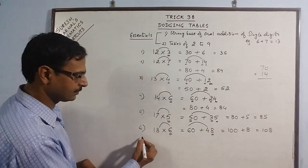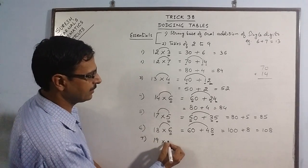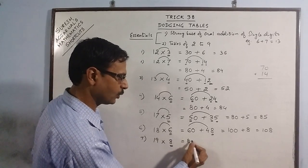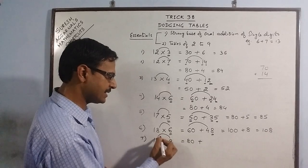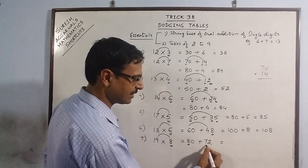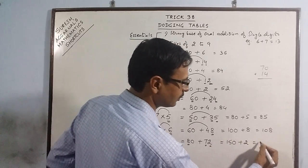More examples. Say we have 19 multiplied by 8. 8, put a 0. 8 nines are 72. 8 plus 7: 15. Put a 0 and add this to get 152.